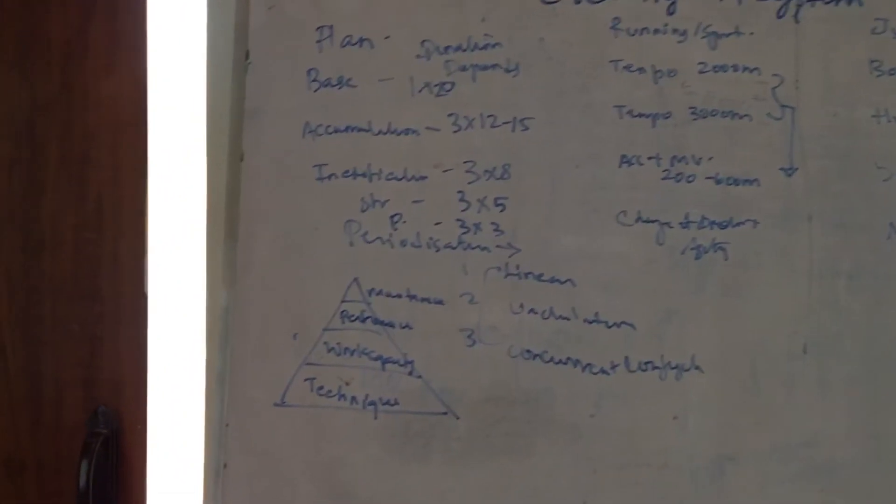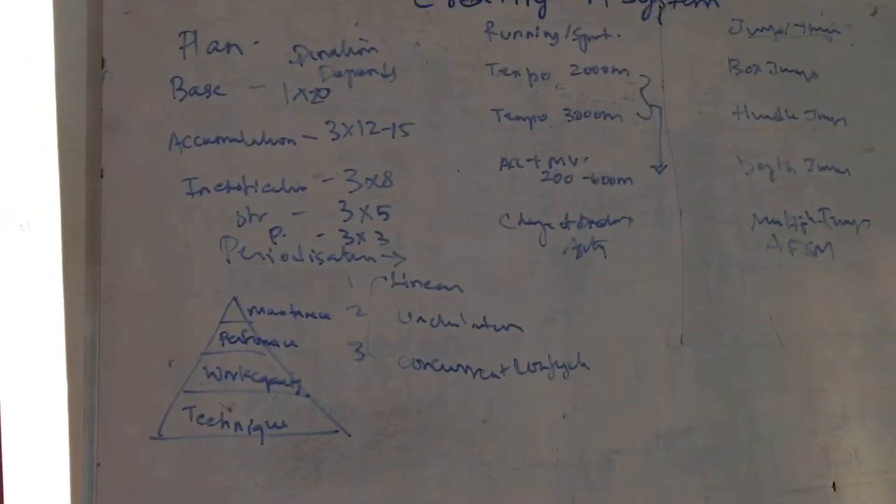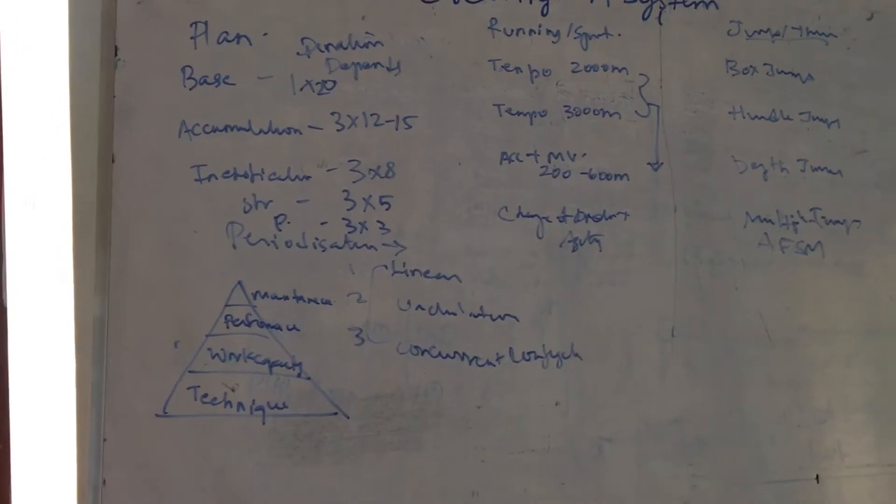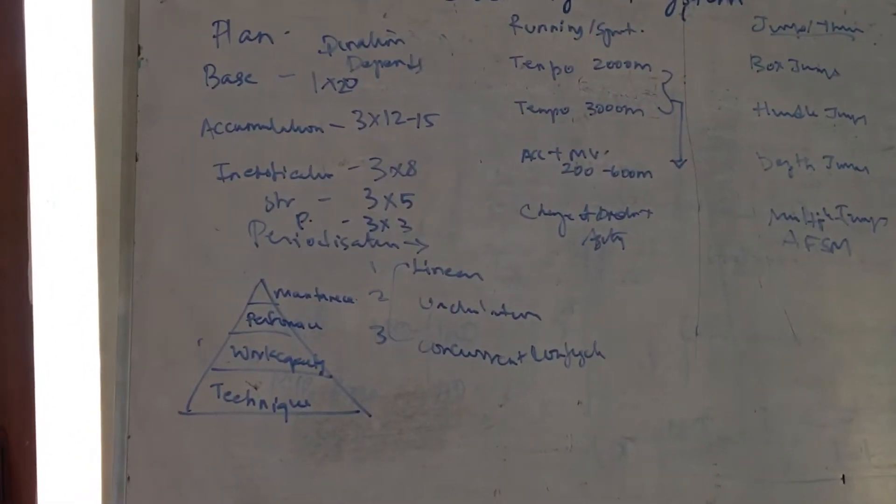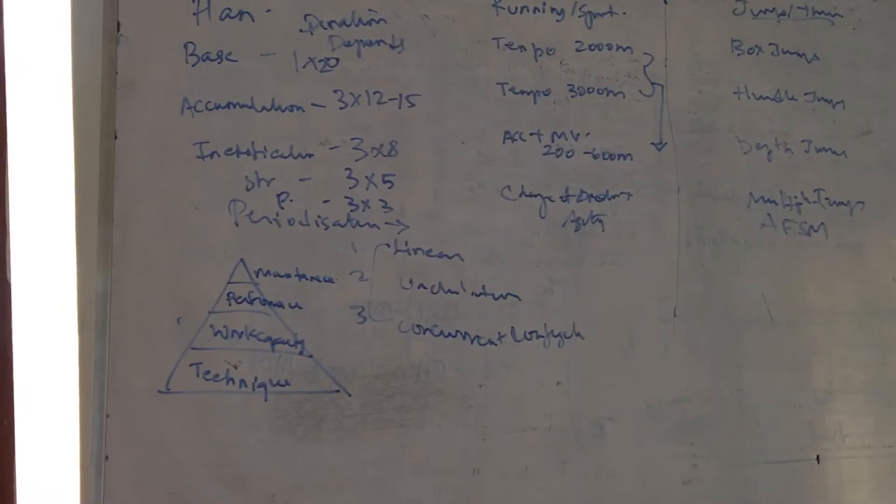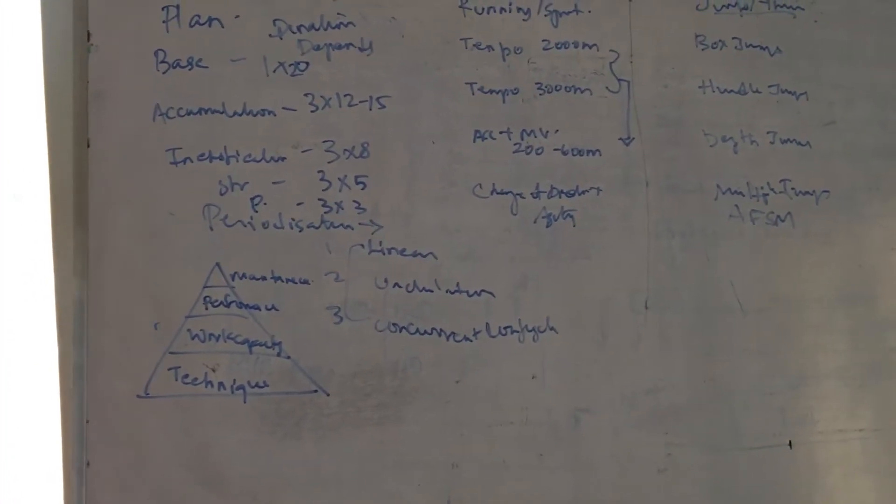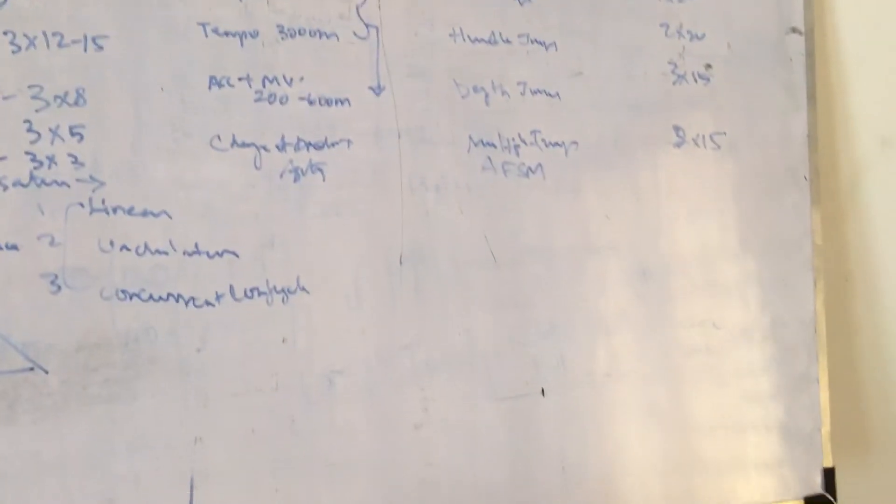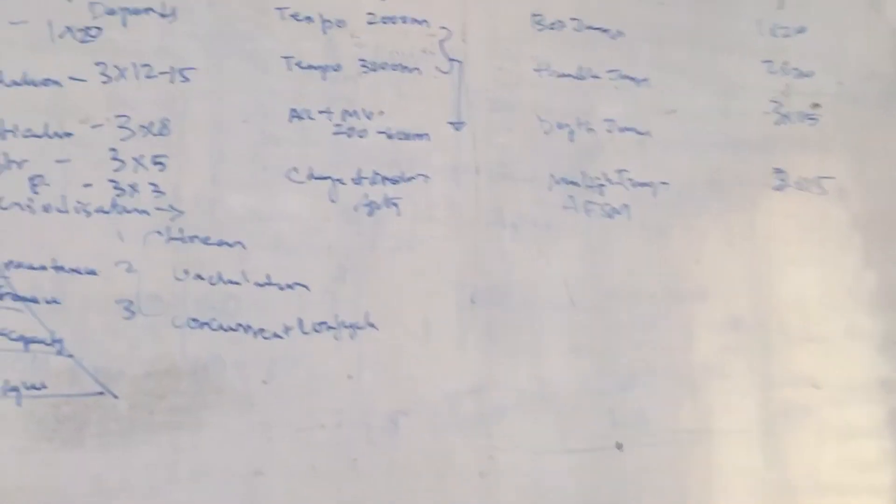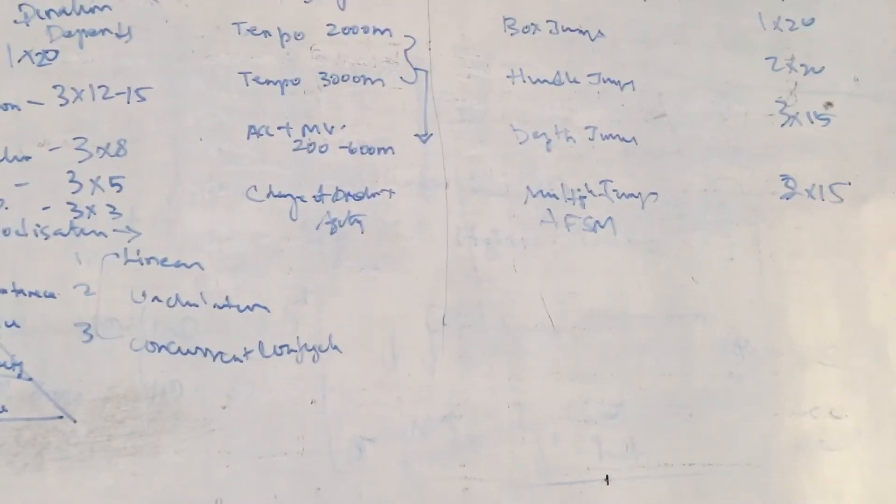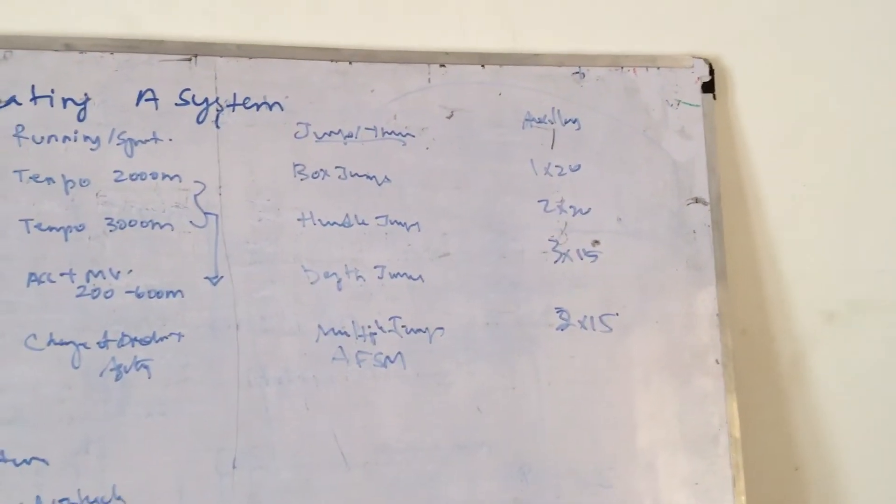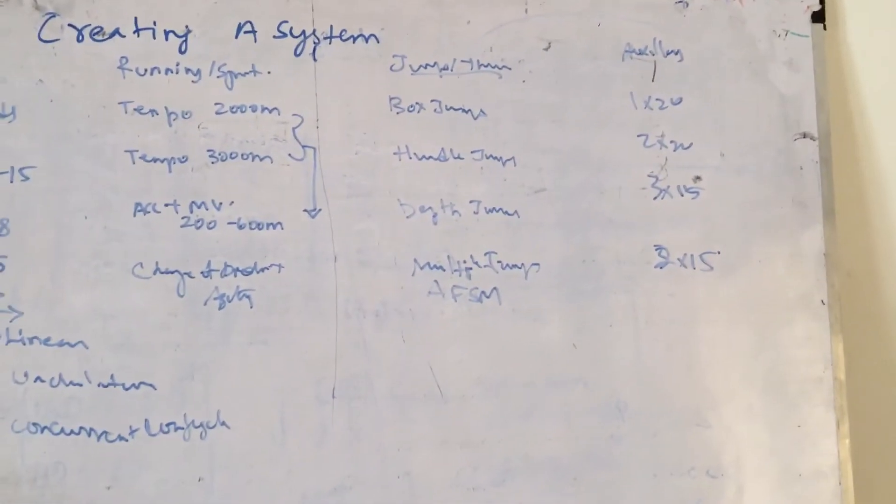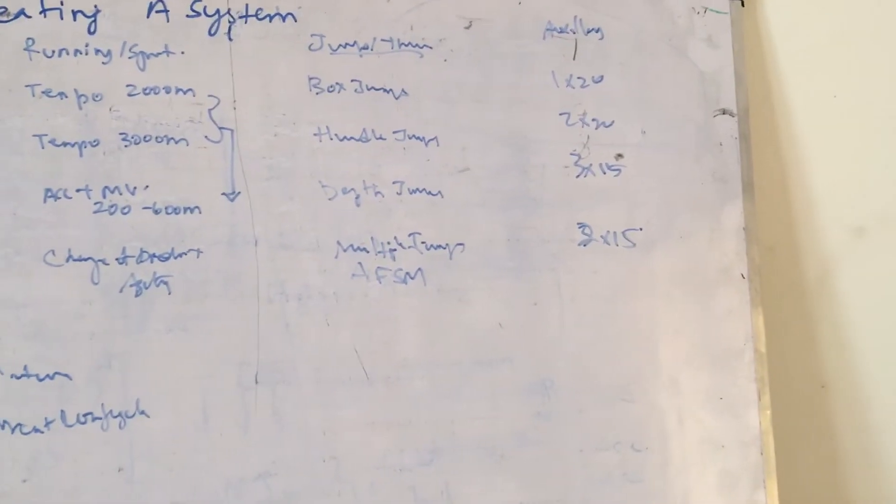Finally, there's the power and peaking performance phase. Here we can add change of direction drills. We address the aerobic base, sprint speed, and high velocity movement, incorporating it into agility and change of direction. We have multiple jumps with antagonist facilitation—that's Verkoshansky's shock method—with multiple directions. For auxiliary, we're just maintaining at 2x15.